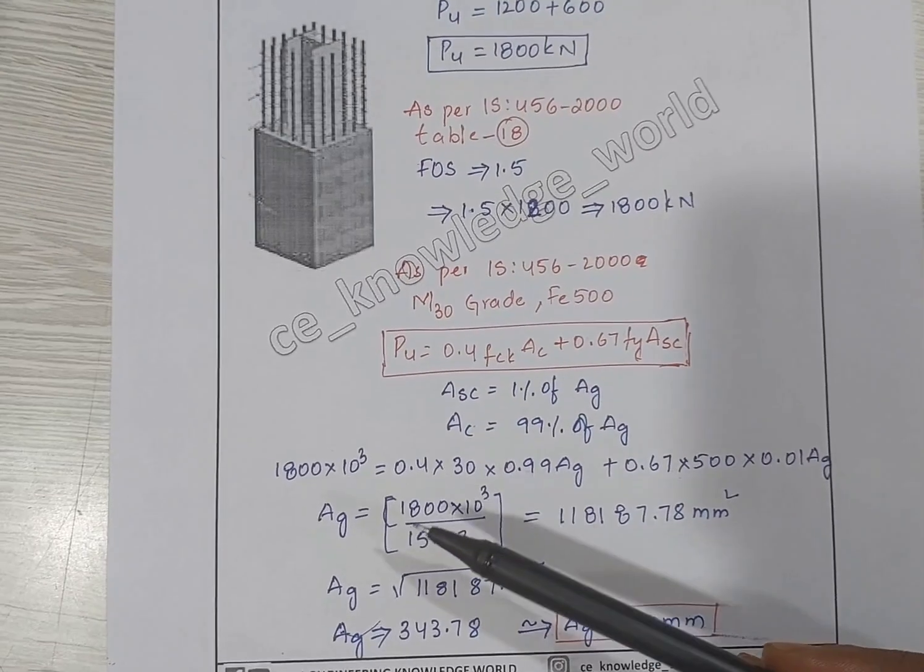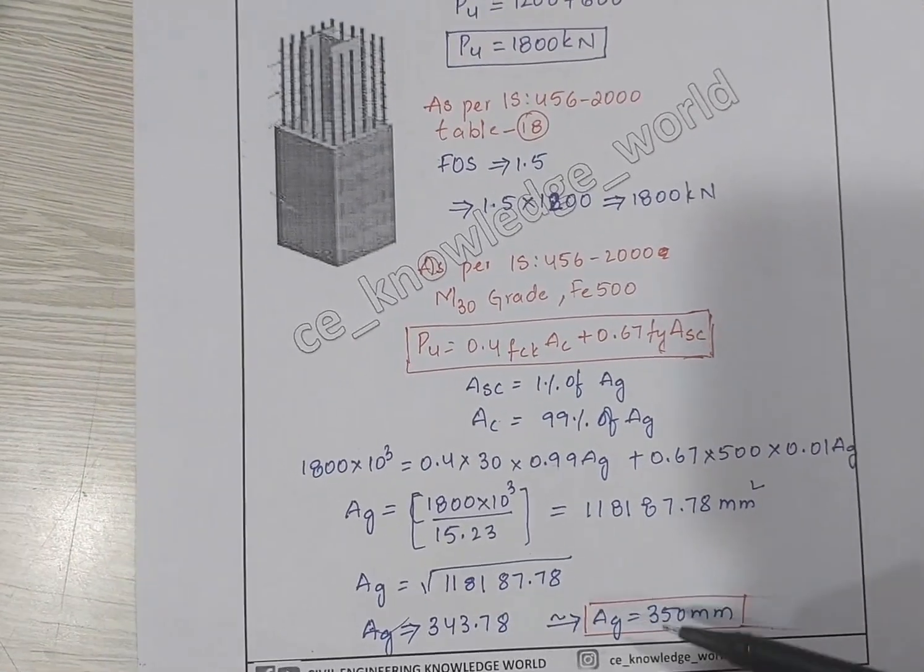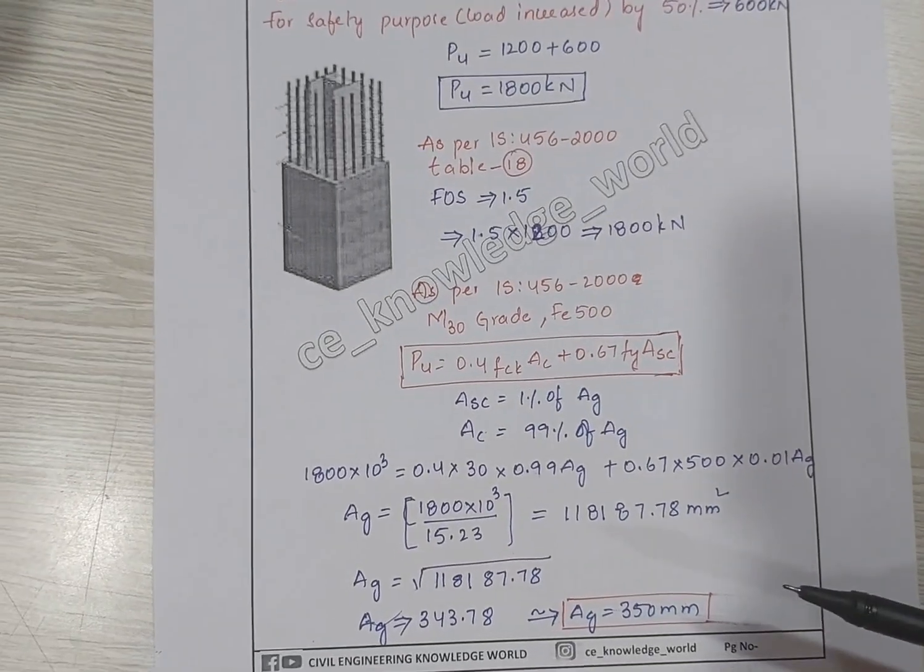After calculating this, we will get Ag equals 1800.12 square millimeters. The column size is 350 millimeters.